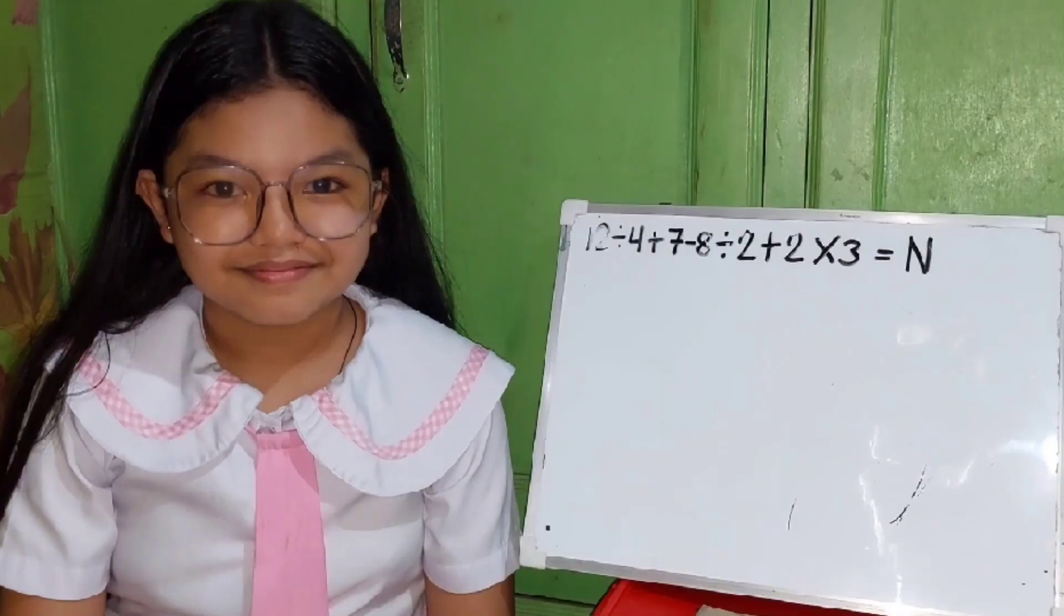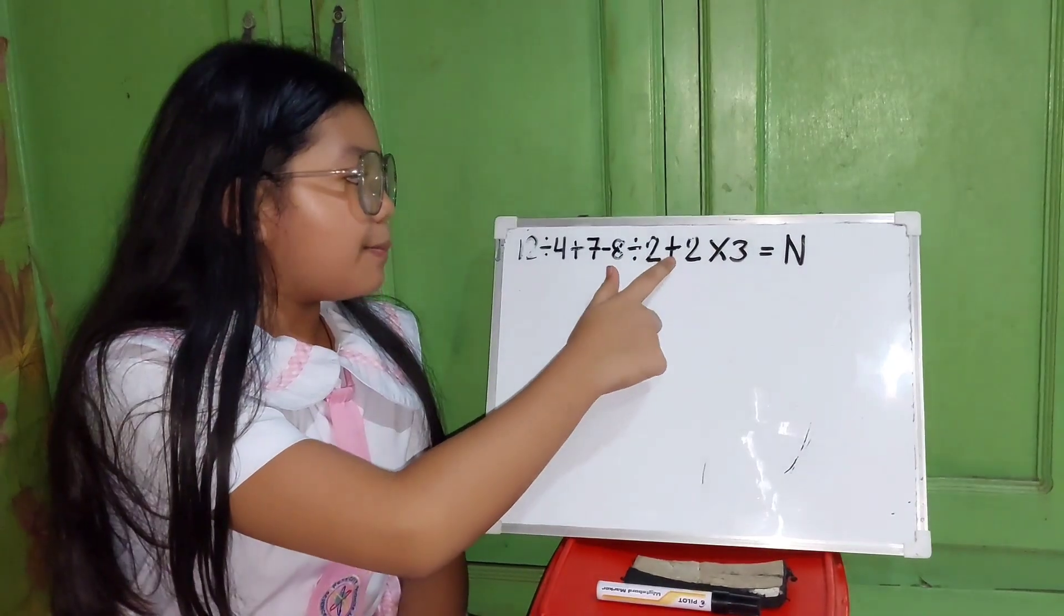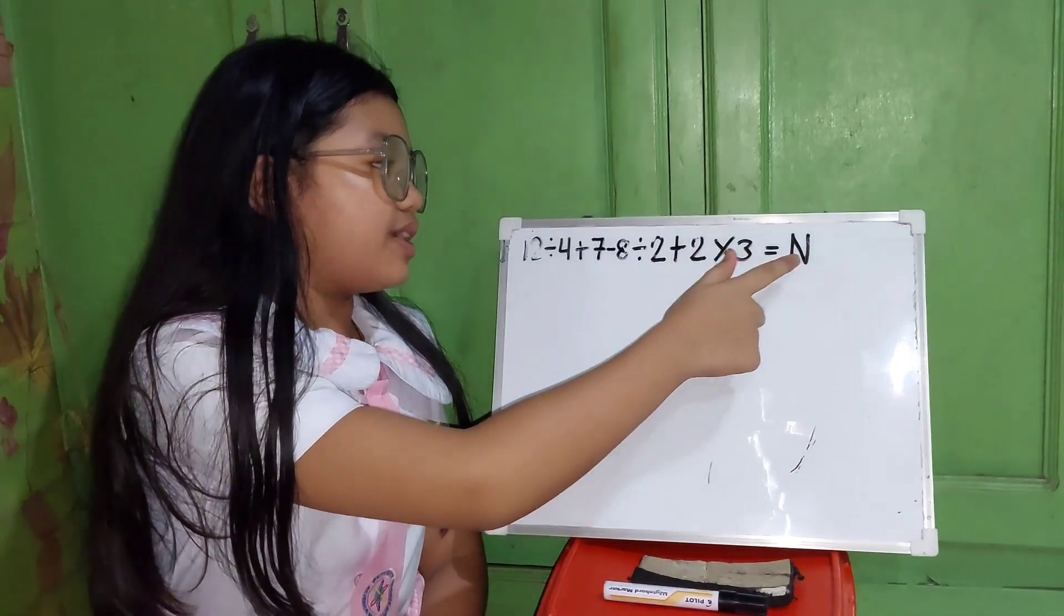Good afternoon, everyone! So now, let's try to solve this mathematical expression: 12 divided by 4 plus 7 minus 8 divided by 2 plus 2 times 3 equals n.